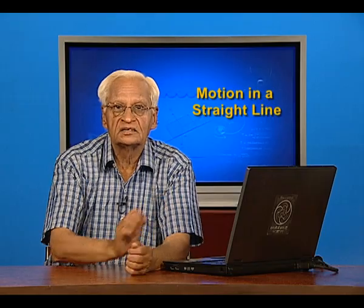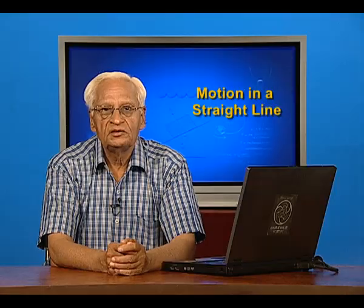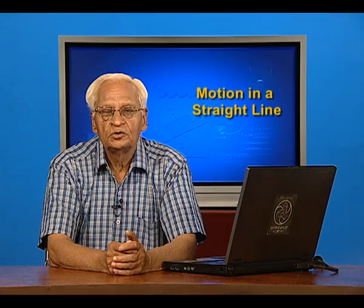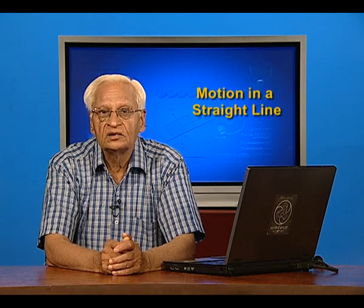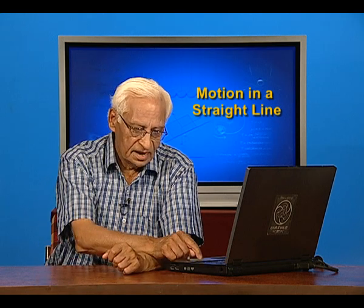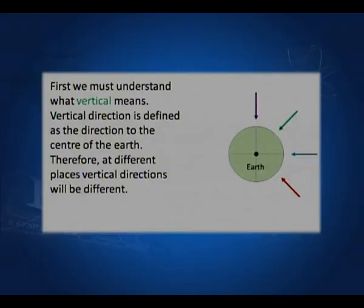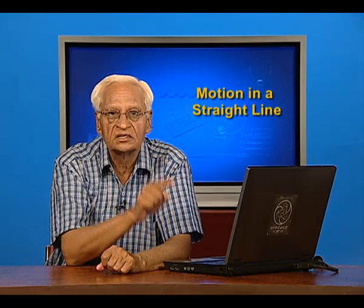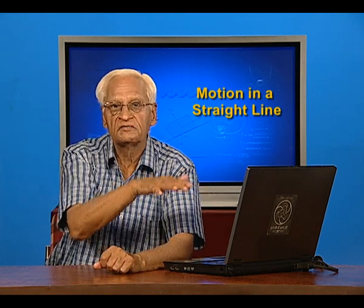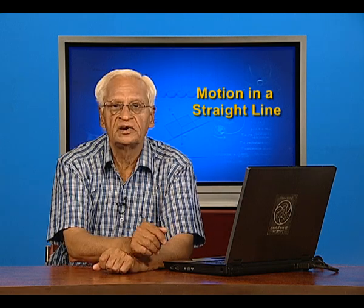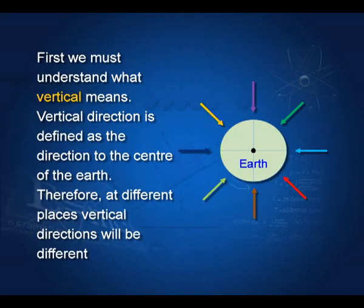When we consider vertical direction, the first thing is to understand what is vertical. Many students are not able to answer this question. Vertical direction is the direction towards the center of the earth, and it can be different at different places. The horizontal direction is perpendicular to the vertical direction. We define vertical direction first, and then the horizontal direction.